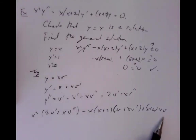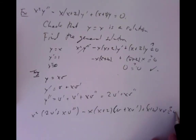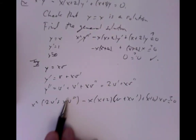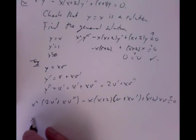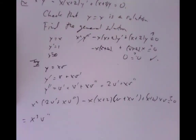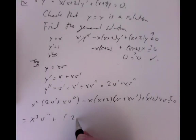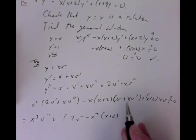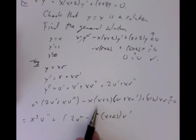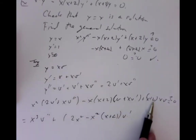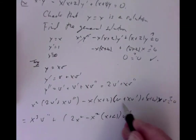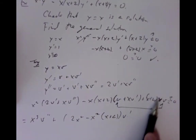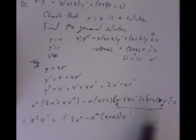Expanding: the v''-term is x³v''. For v', we get 2x²v' from the first piece, minus x²(x+2)v' from the second piece. Simplifying: 2x² - x³ - 2x² = -x³, so the v'-coefficient becomes -x³ too — wait, let me correct: it's actually 2x² minus x²(x+2), giving 2x² - x³ - 2x² = -x³. The v-terms cancel exactly as expected since y1 = x solves the homogeneous.